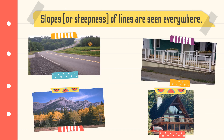Actually, slopes are everywhere. We can see them in roads, in our staircase, in the ramps for the disabled. It is also associated with mountains as well as the roof of our houses. So, slope is what we call the stiffness — in Tagalog, yung pagiging matari — and it also pertains to the slantness of a line.